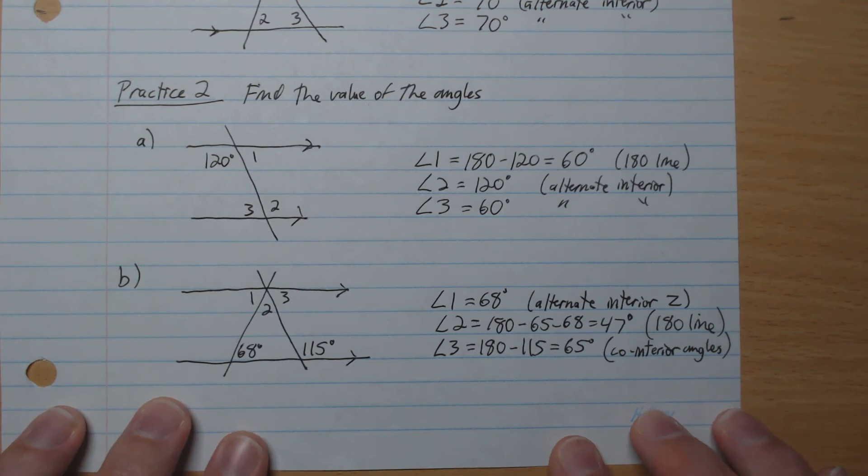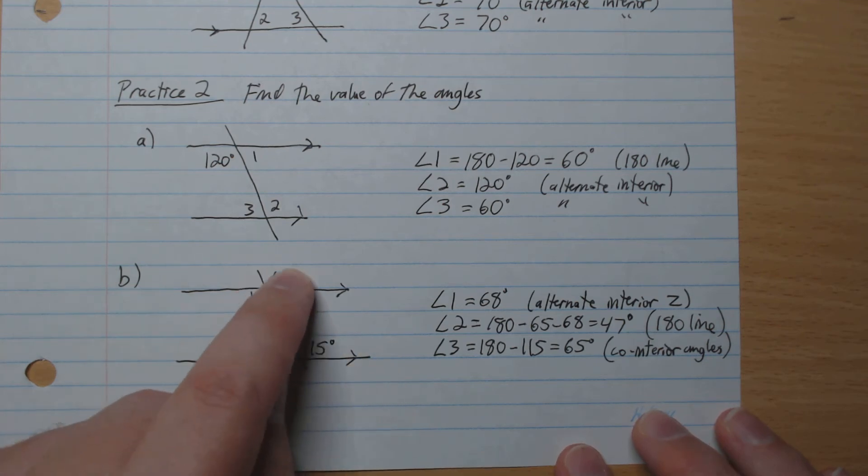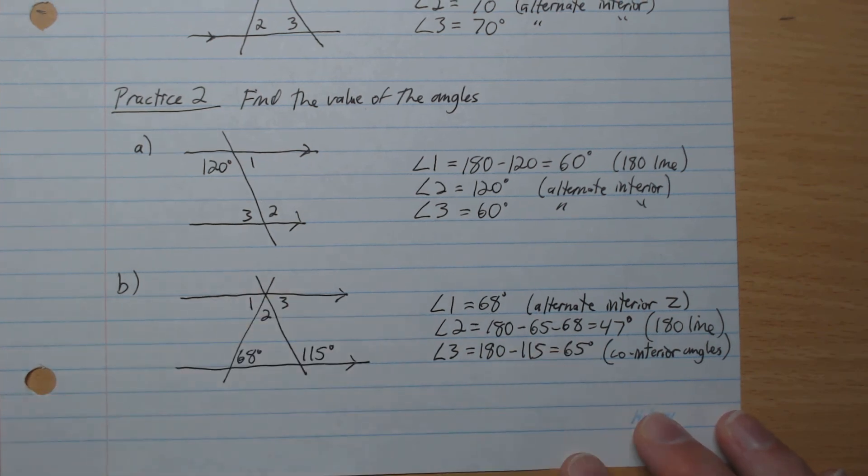Part B. We have alternate interior like this. So angle 1 is 68. Angle 3, we have 180 minus 115, co-interior. So angle 3 is 65.